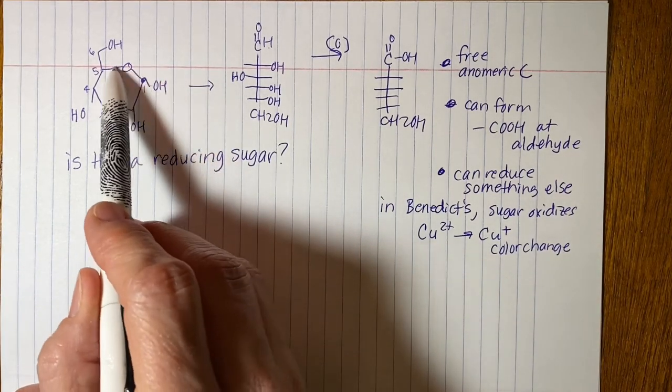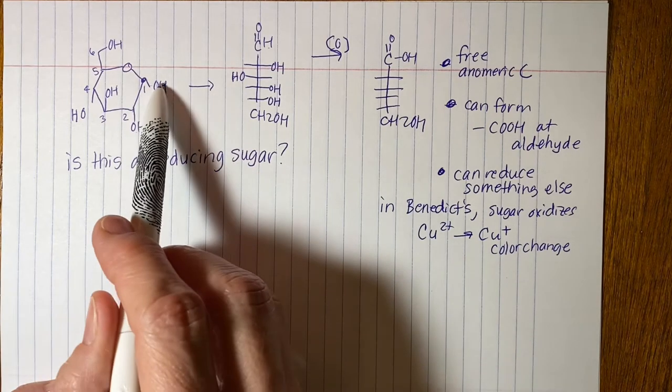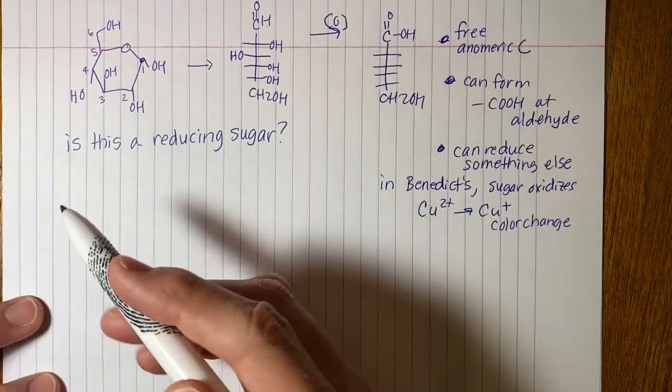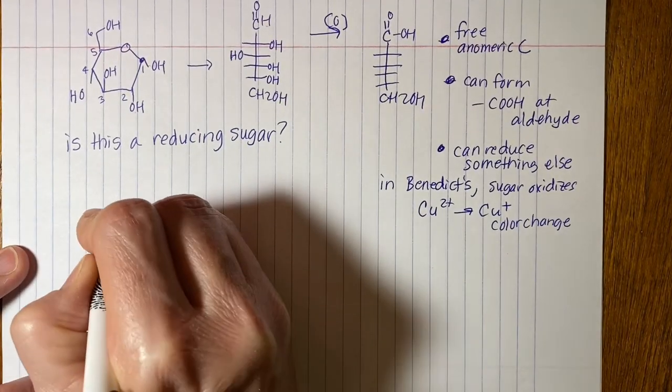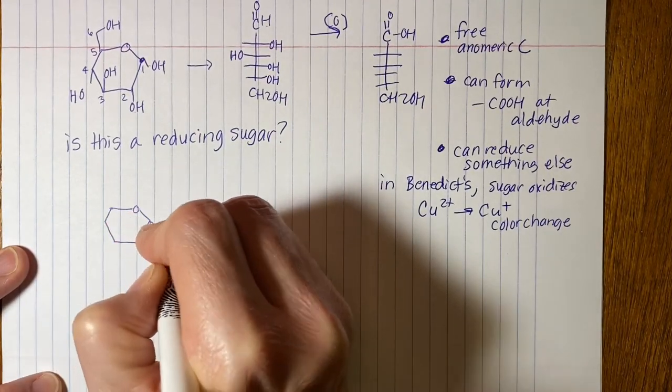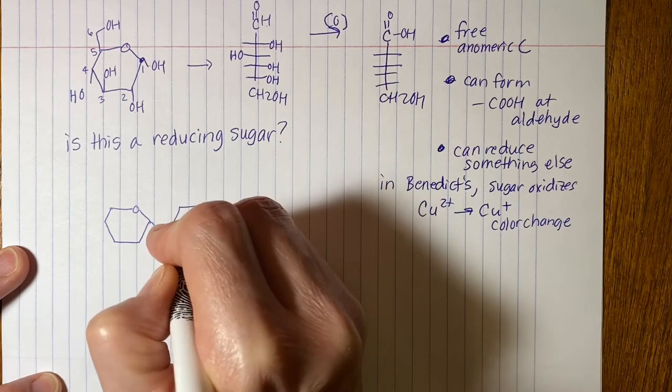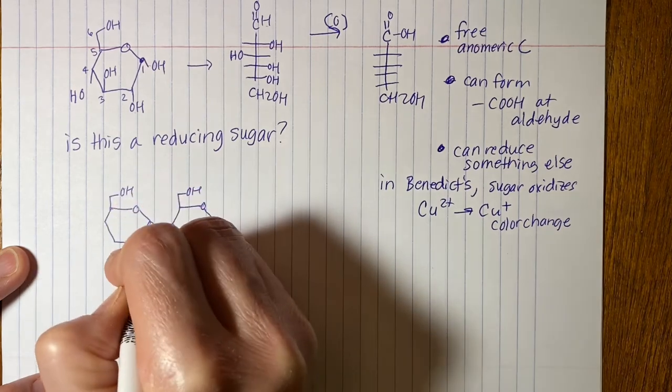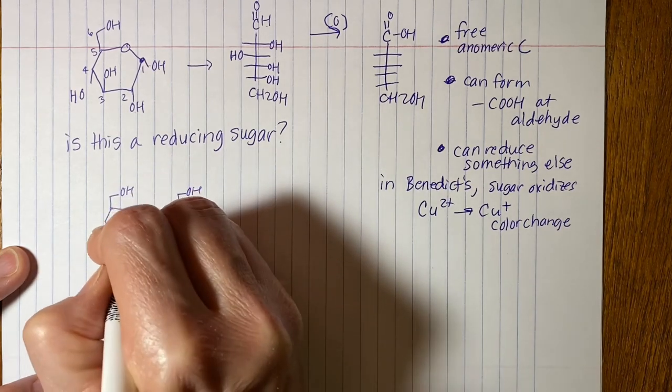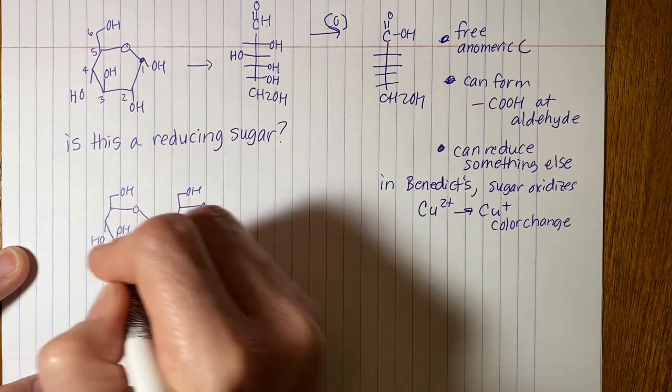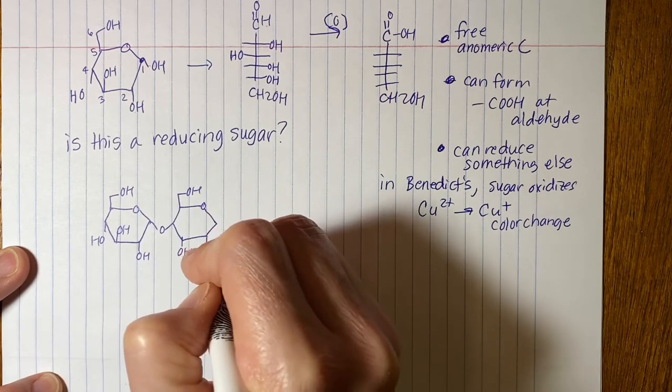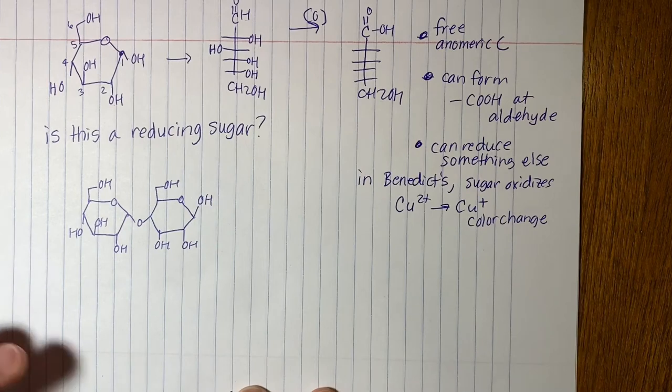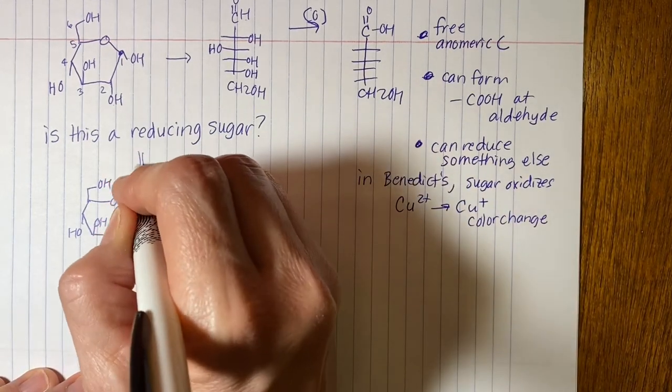So again, any cyclic monosaccharide that has a free anomeric carbon is a reducing sugar. Now let's just quickly look at a disaccharide. I'm just drawing a simple disaccharide here. Now is that structure a reducing sugar? So let's look at that one.